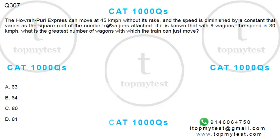The Howrah-Puri Express can move at 45 kmph without its rake, which means if nothing is attached to it, it will go at 45 kmph. The speed is diminished by a constant that varies as the square root of the number of wagons attached. So, decrease in speed is proportional to square root of number of wagons.